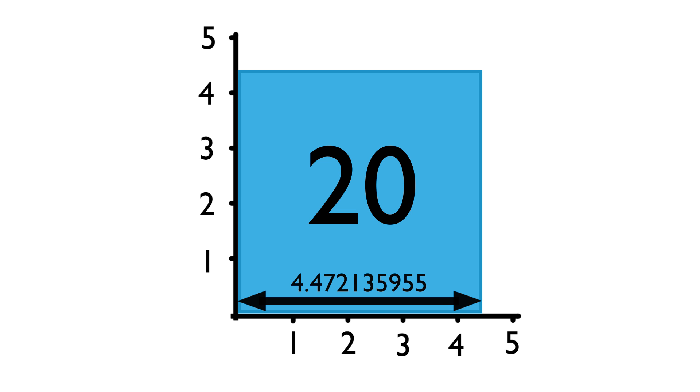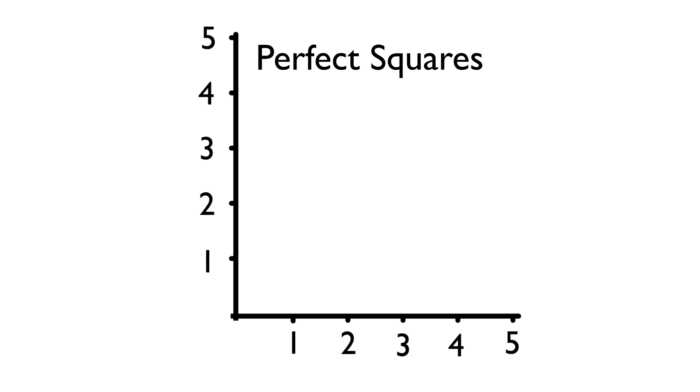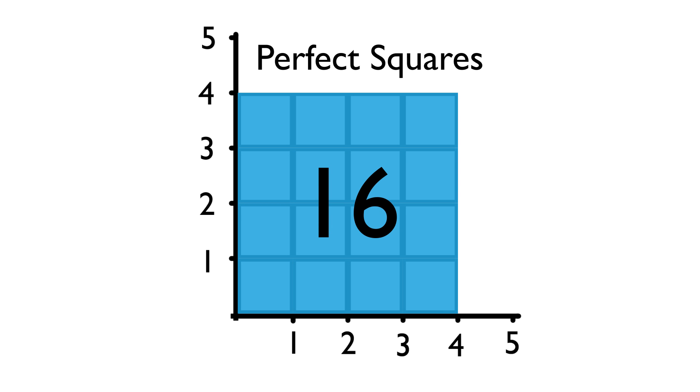Now, some numbers are called perfect squares, which means when you square root them, the answer is a whole number. So the square root of 16 is 4, so 16 is a perfect square.